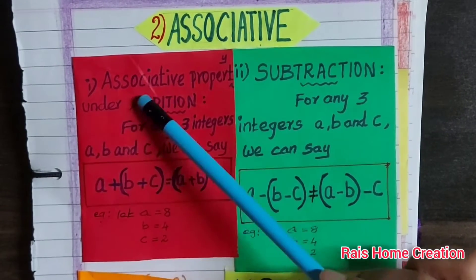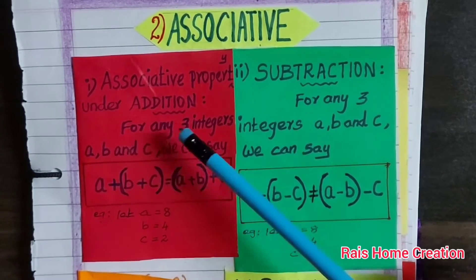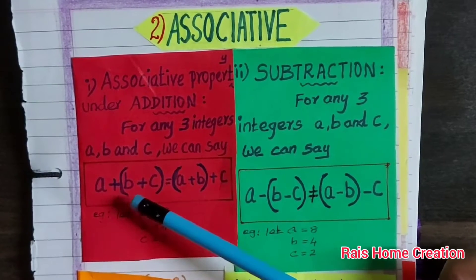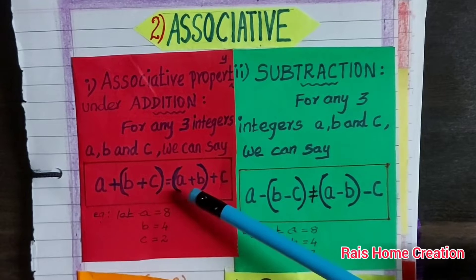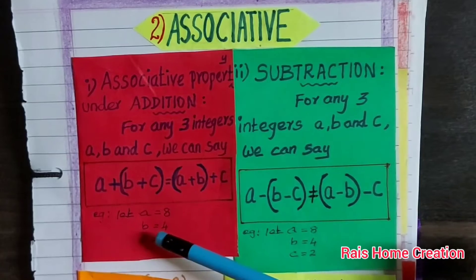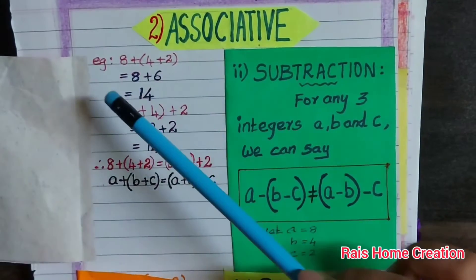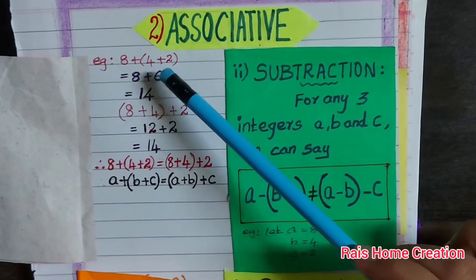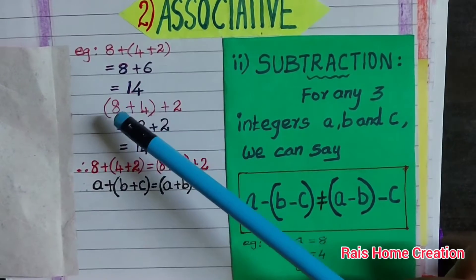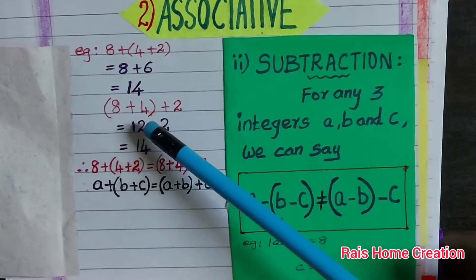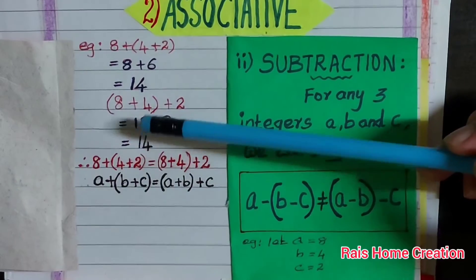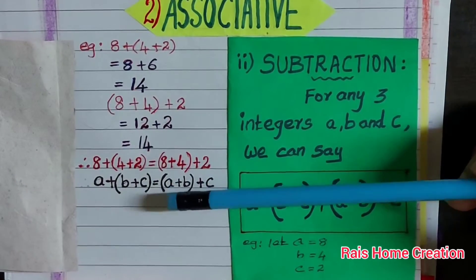Associative property under addition. For any three integers A, B and C, we can say (A plus B) plus C equal to A plus (B plus C). Example: let A equal to 8, B equal to 4, C equal to 2. 8 plus 4 plus 2: 4 plus 2 equal to 6, 8 plus 6 equal to 14. 8 plus 4 plus 2: 8 plus 4 equal to 12, 12 plus 2 equal to 14. Both answers are same. Hence, the given condition is equal.